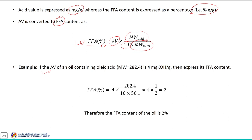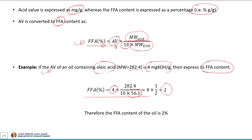For example, if the acid value of oil containing oleic acid is 4 mg KOH per gram of oil sample, we can express its FFA content using the equation. The molecular weight of oleic acid is 282.4 and the molecular weight of KOH is 56.1. Substituting these values gives an FFA percentage of 2. So normally the free fatty acid content of any sample is considered as half of its acid value — if the acid value is 4, the FFA content is considered as 2 percent.